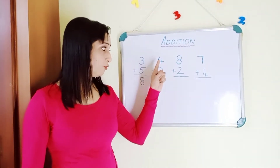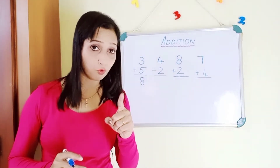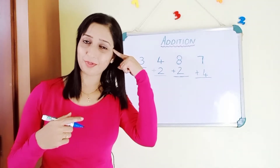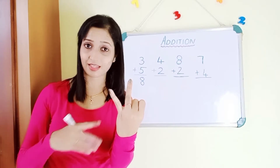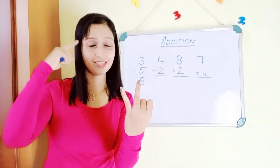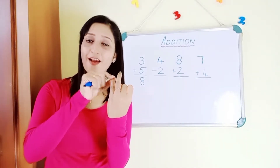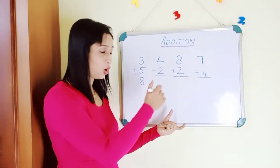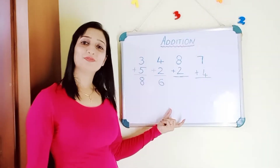Next example: four plus two. Which is the bigger number? Four is the bigger number. So you take four in your mind and two in your hand. Count forward after four: five, six. So the answer is six.